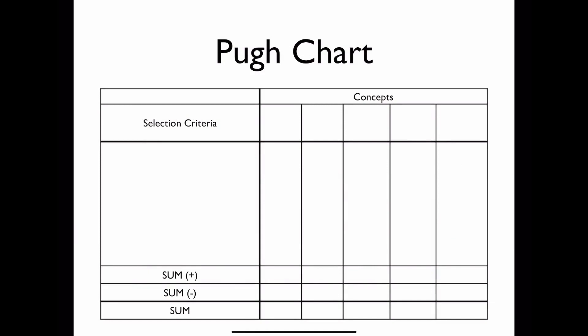In laying this out, this is the format of a Pugh Chart. And so across the top up here, we're going to have our different concepts. And so for the sake of argument, let's say that I picked a square, a triangle, a circle, a star, and then I'll attempt a 3D box as our last concept.